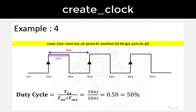Example 4: You can also practice the reverse — given a constraint, draw the waveform. The constraint create_clock -name test_clock -period 20 -waveform {10 20} [get_ports clock_pl] means: time period is 20 ns, rising at 10 ns, falling at 20 ns, repeating. Duty cycle = 10/20 = 50%. Practice both directions: writing constraints from waveforms and drawing waveforms from constraints.